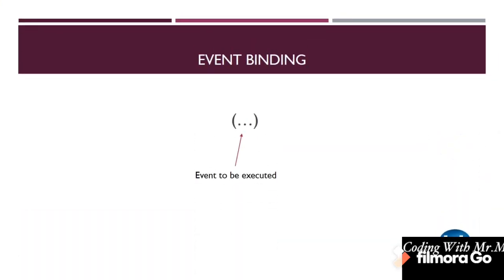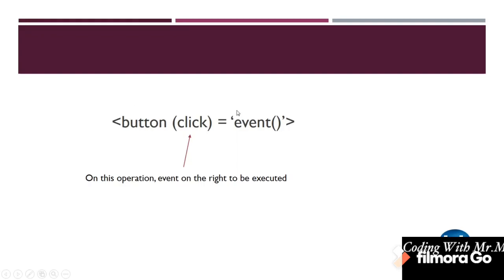There are times when you want information to flow the other way — from your template to the component — and that's when we use event binding. Whenever you have some operation in your template and you want something in the component to execute on a click or operation, that's event binding. To do event binding, we use round brackets and write the operation inside them.